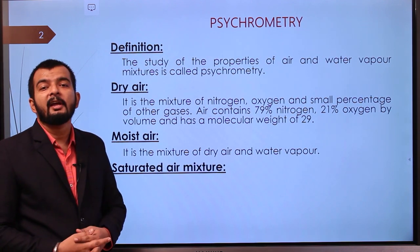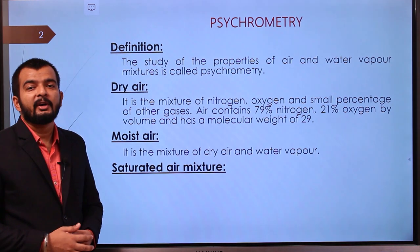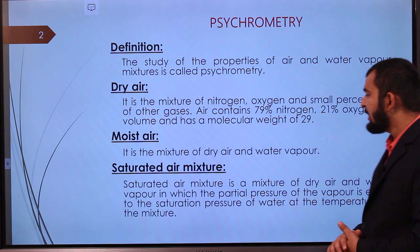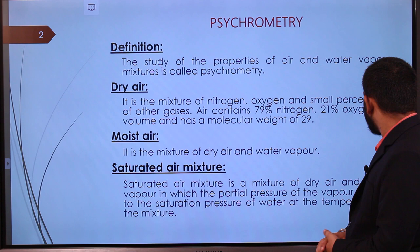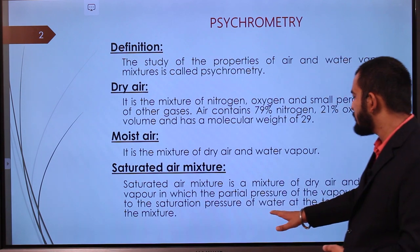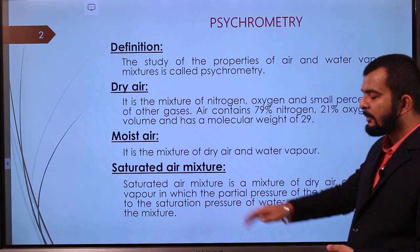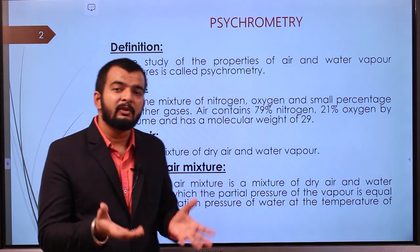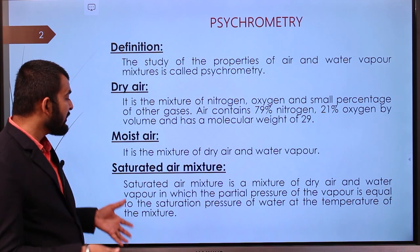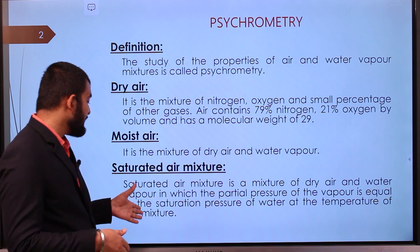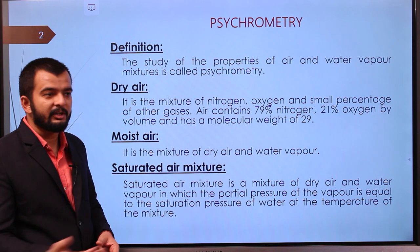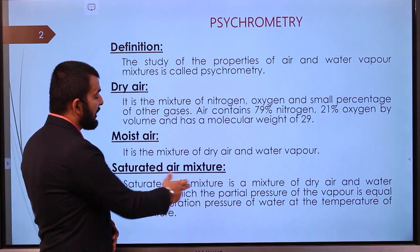Saturated air mixture is a mixture of dry air and water vapor in which the partial pressure of the vapor is equal to the saturation pressure of water at that temperature of the mixture. That means if we take moist air and keep increasing moisture content until the partial pressure of the vapors equals the saturation pressure of water at that temperature and pressure, that is called saturated air mixture.